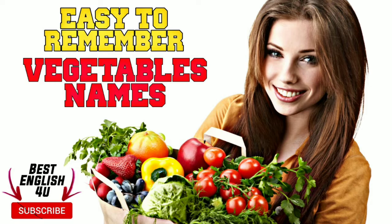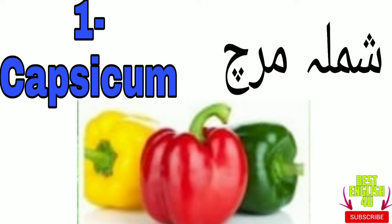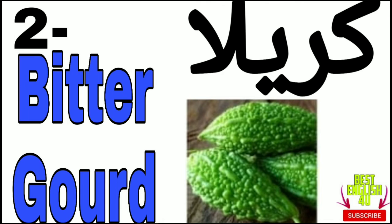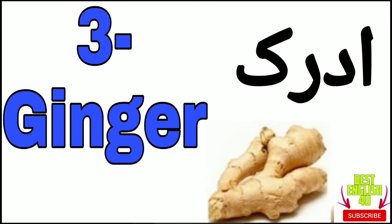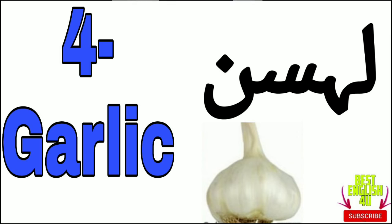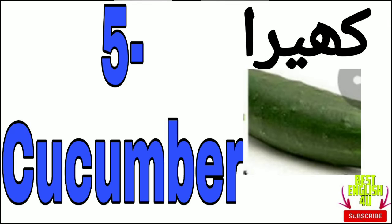Let's start the video. Our first vegetable is capsicum — shimla mirch. Next is bitter gourd — karela. Next is ginger — adrak. Next is garlic — lehsun. Next is cucumber.